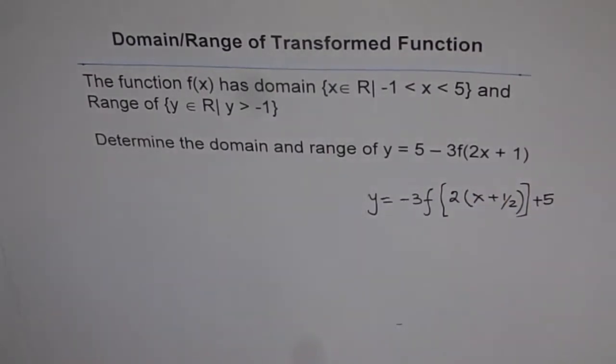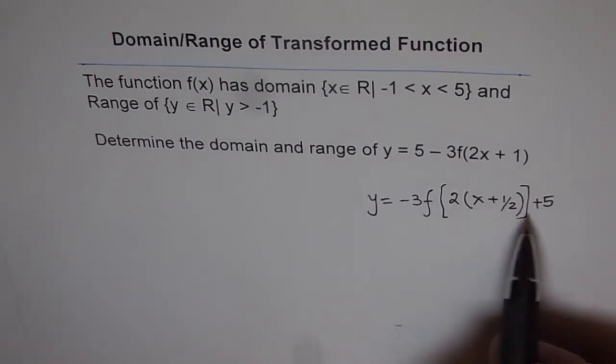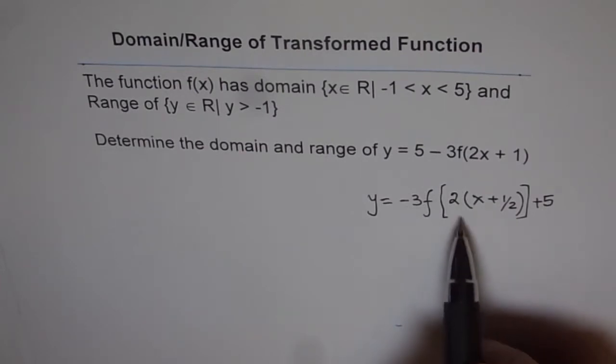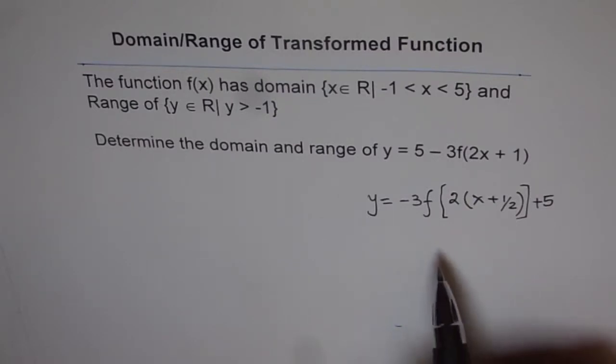Once you do that, now things become more familiar. You can correlate with your standard transformed function equation and you know that these points refer to vertical and these refer to horizontal. It kind of becomes easier to answer the questions.